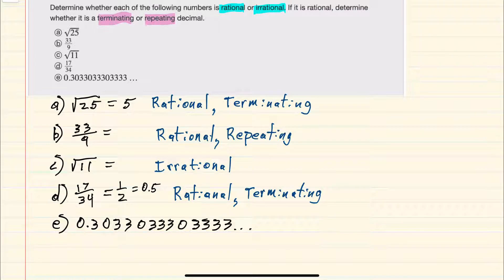For e, we have the decimal given here, so we can tell that it's not terminating. Our next question would be, is it repeating? And while we can see that we have what looks like a pattern, we have a single three, and then two threes, and then three threes,